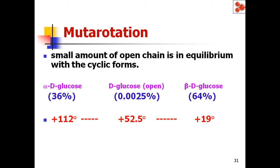Initially, when you originally prepare alpha-D-glucose solution, note that D-glucose is the open chain structure, while alpha-D-glucose and beta-D-glucose are cyclic ring structures. When you take a freshly prepared alpha-D-glucose solution and measure the optical rotation, it is plus 112 degrees, and for beta-D-glucose the optical rotation is about plus 19 degrees.